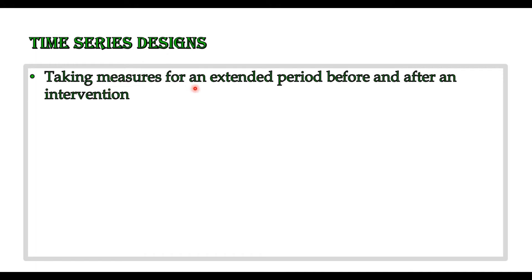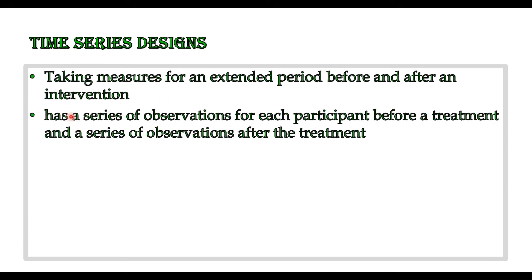Let us do the second type of COSA experimental design, which is called time series design. Time series takes measures for an extended period before and after an intervention. There are a series of observations for each participant before a treatment and a series of observations after the treatment.